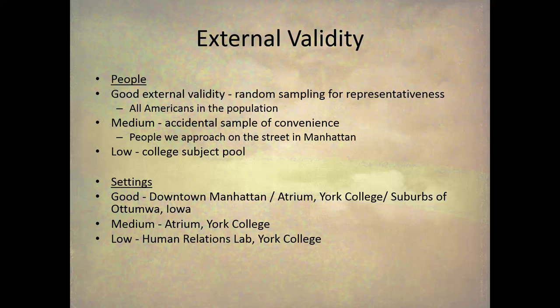For settings, we think about what we want to generalize the results to, and then we include examples of those settings in the experiment itself. So, instead of just doing an experiment in downtown Manhattan, we do it in the atrium at York and in the suburbs of Ottumwa, Iowa — giving us a sampling of the different settings you would see in the United States, which would represent high external validity.